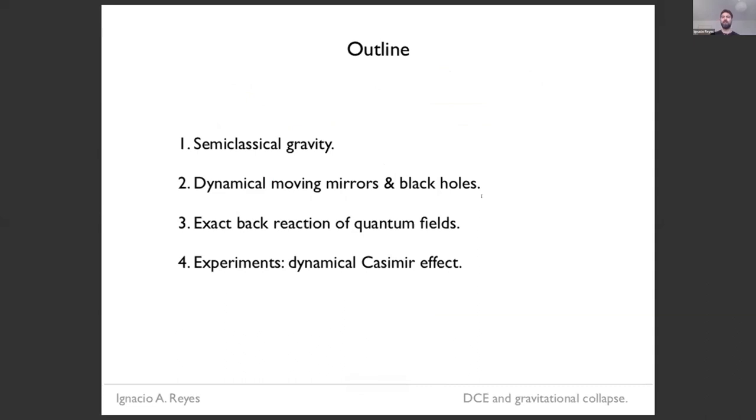So here's a quick outline. I'm going to start by reviewing some very well-known aspects of semi-classical gravity. Then I'm going to move to the main topic, which is a story of dynamical moving mirrors and the relationship to black holes. I'm going to tell you how in this system you can actually fully solve the exact back reaction problem of the quantum fields. And finally, I'm going to make the connection to something that we heard earlier on today, which is some experiments that are relevant for this field that have been conducted in the last decade.